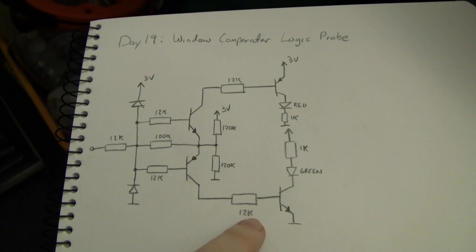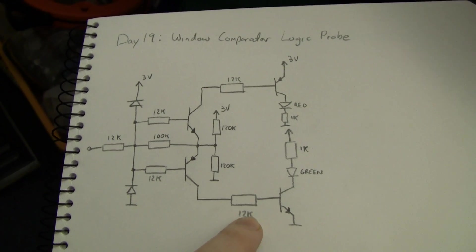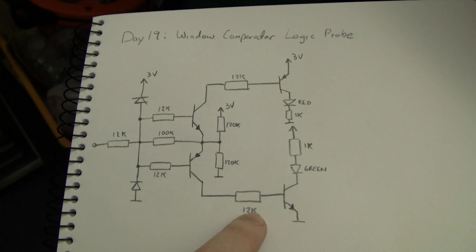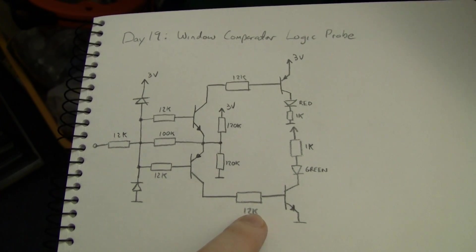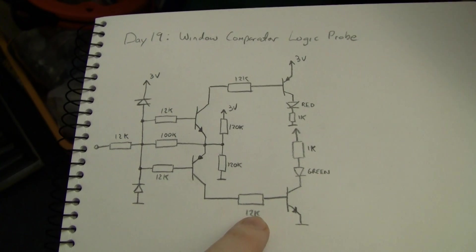I've written 12k here, but I actually used 18k in the circuit, because I have a lot of 18k resistors. It doesn't particularly matter, any value will do, 10k, 20k, anything around there.